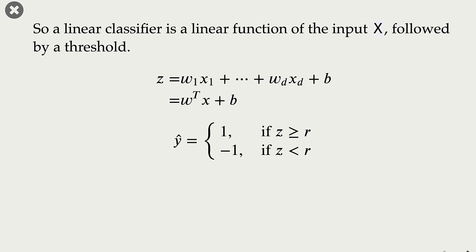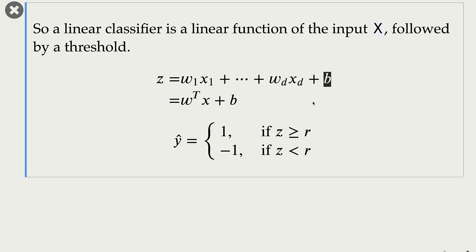A linear classifier is a linear function of the input x followed by a threshold. There are four main components: input features x1 to xd; the learned coefficients or weights w1 to wd; the bias; and the threshold r. In the toy example we saw before, we assumed that both bias and threshold are zero.